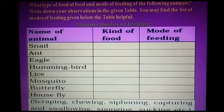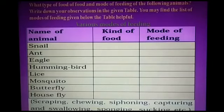Snail: the kind of food a snail takes is insects, and its mode of feeding is scraping. Ant: takes grains, and its mode of feeding is chewing. Eagle: the kind of food is fish, and the mode of feeding is capturing and swallowing.